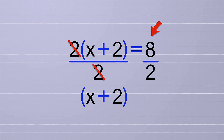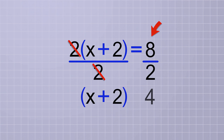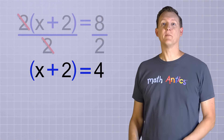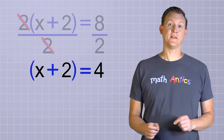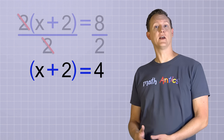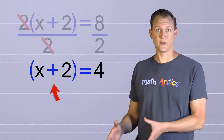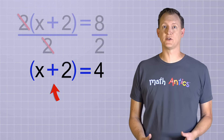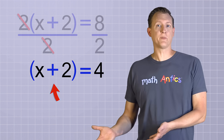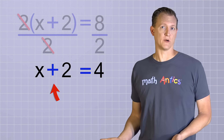And on the other side, we have 8 divided by 2, which is 4. That looks simpler already, and we can make it even simpler, because now that there's nothing else on that side of the equal sign with the group x plus 2, we really don't even need the parentheses anymore.